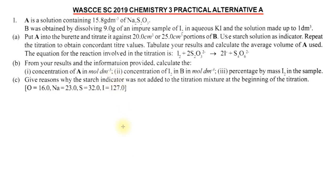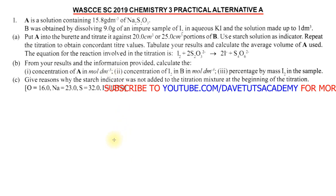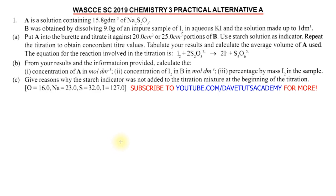We are going to be looking at the iodometric titration, popularly called iodometry. It is actually a redox titration in which we use sodium thiosulfate as a reducing agent. In the practical world, it is used to analyze the concentration of oxidizing agents in water samples — for example, to check the amount of active chlorine in swimming pools and water analysis.